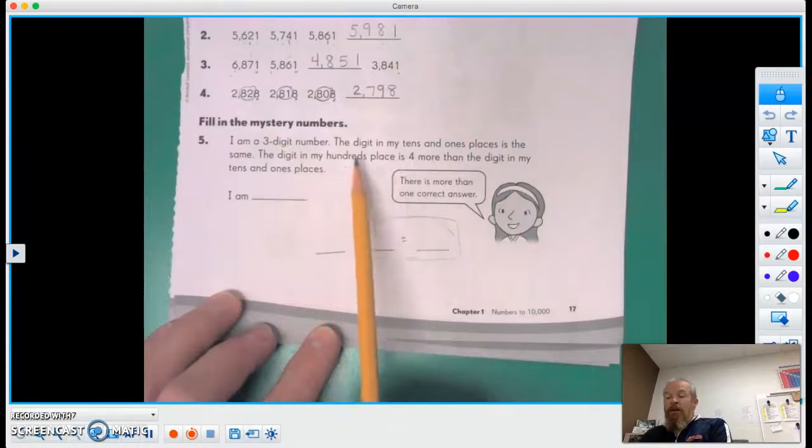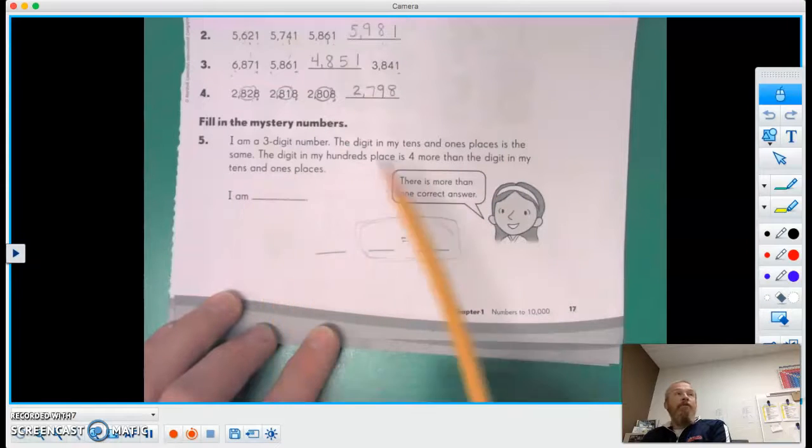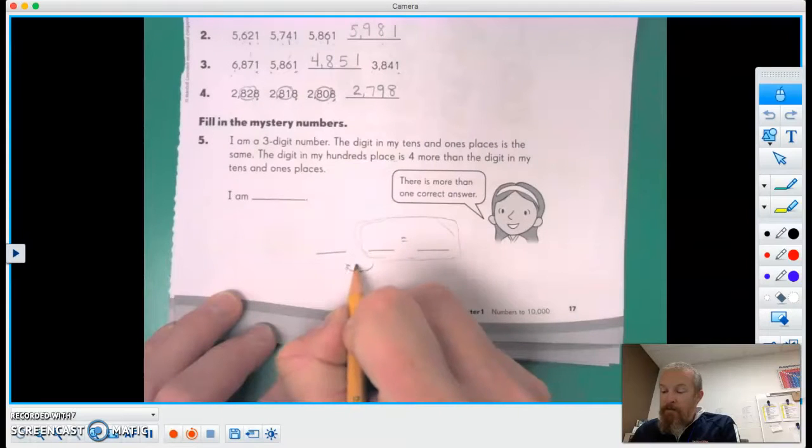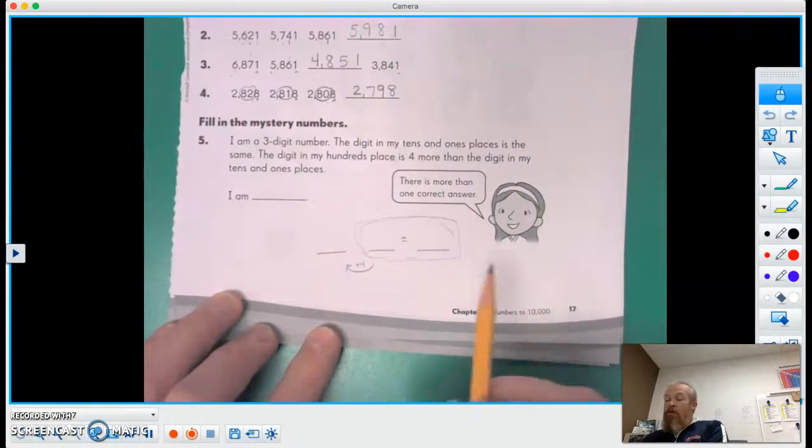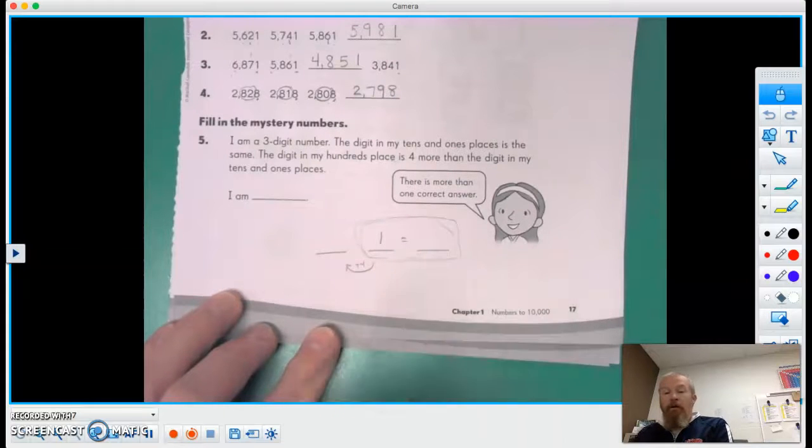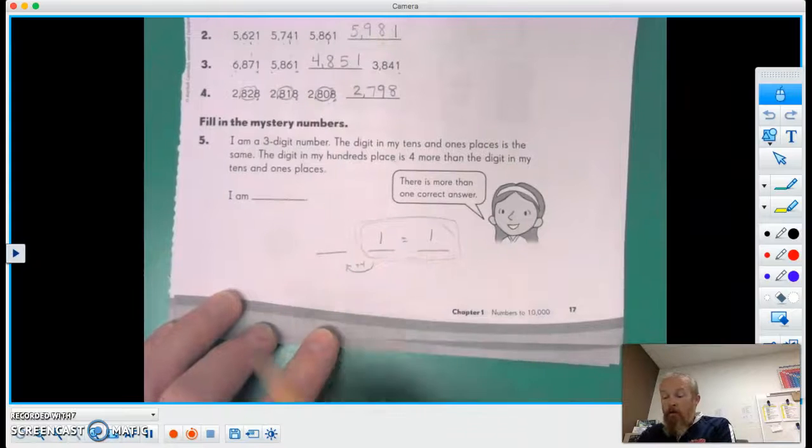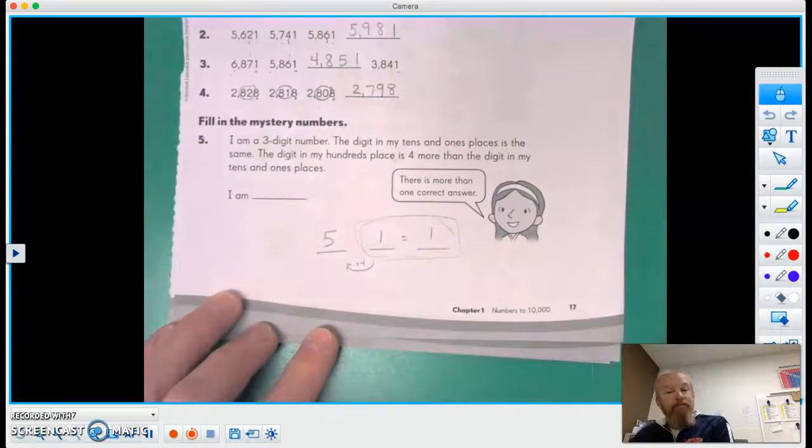The digit in my hundreds place is four more than the digit in my tens and ones place. So whatever digit that is, this digit is going to be plus four. Okay, so for example, what if I put a one here? What would go here? A one. What would go here? Well, one plus four is five, right?